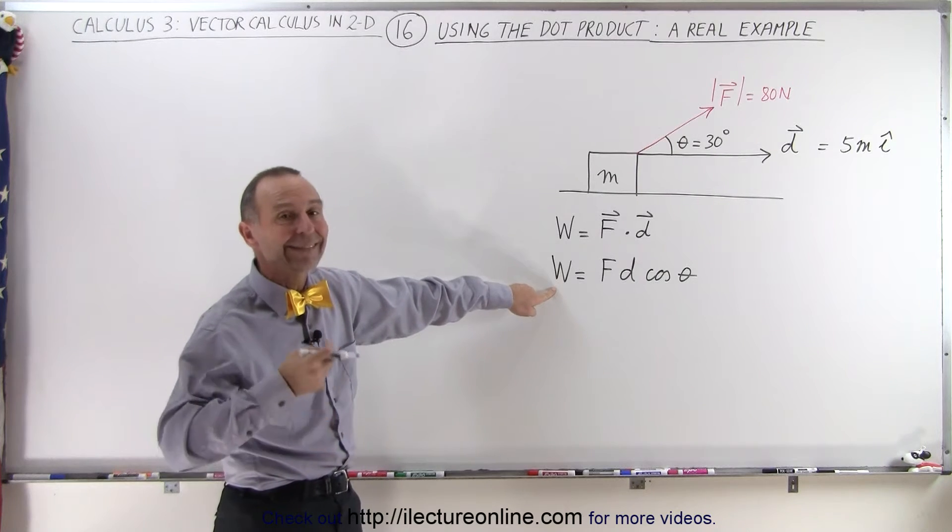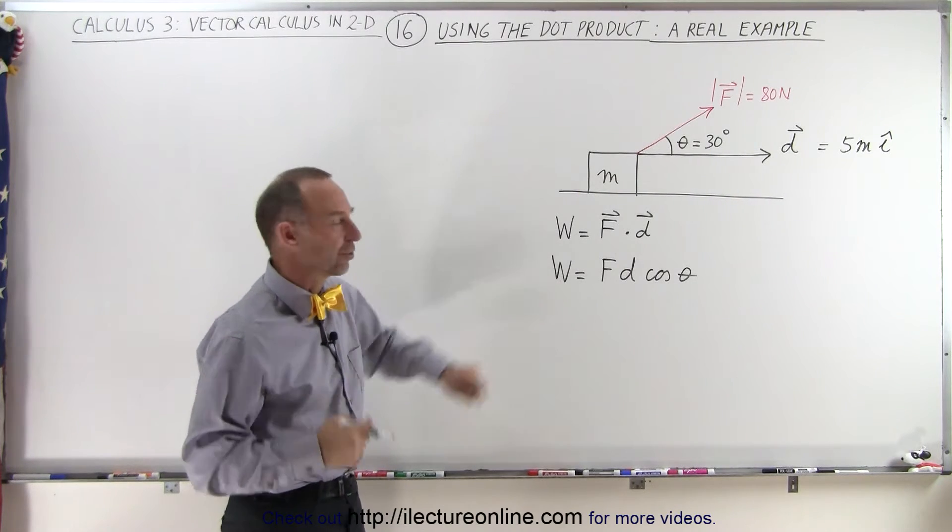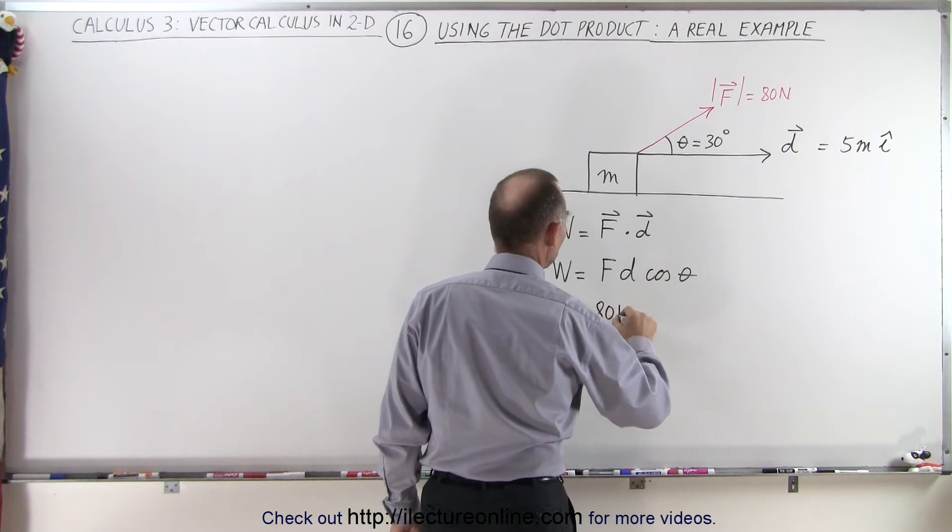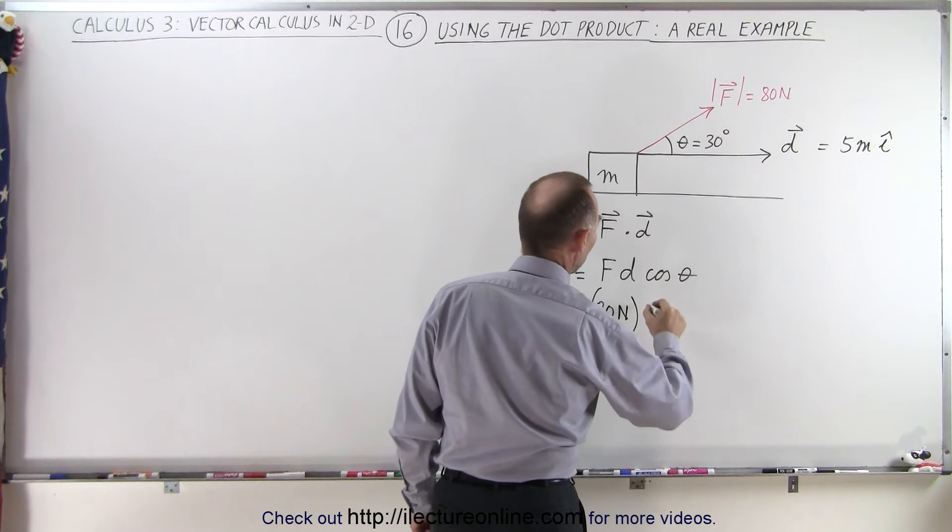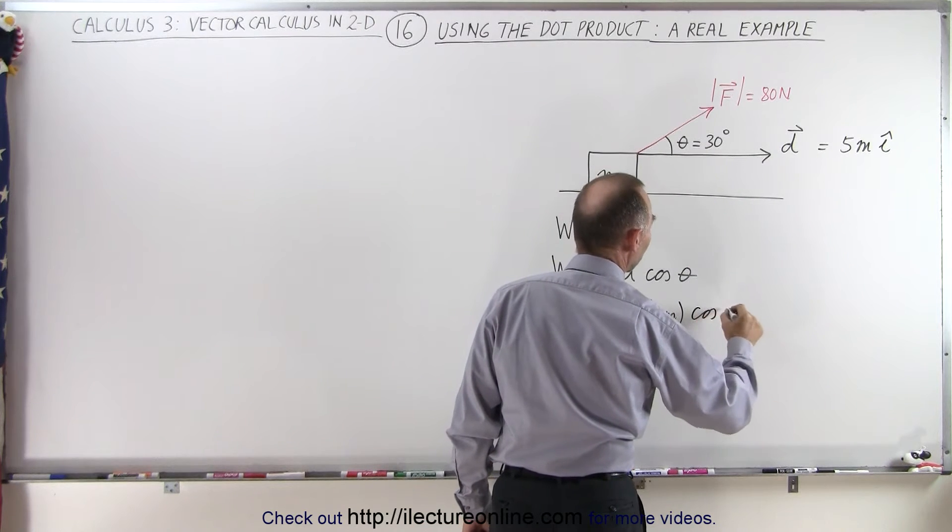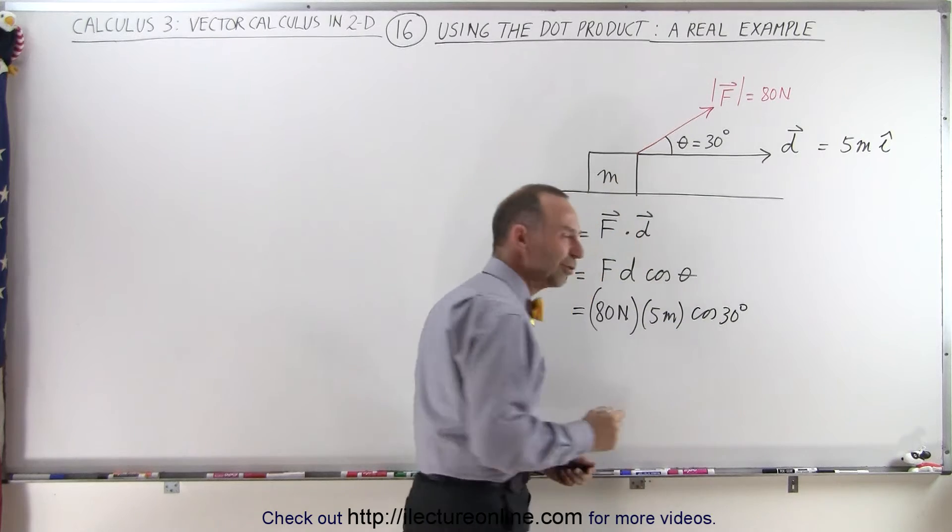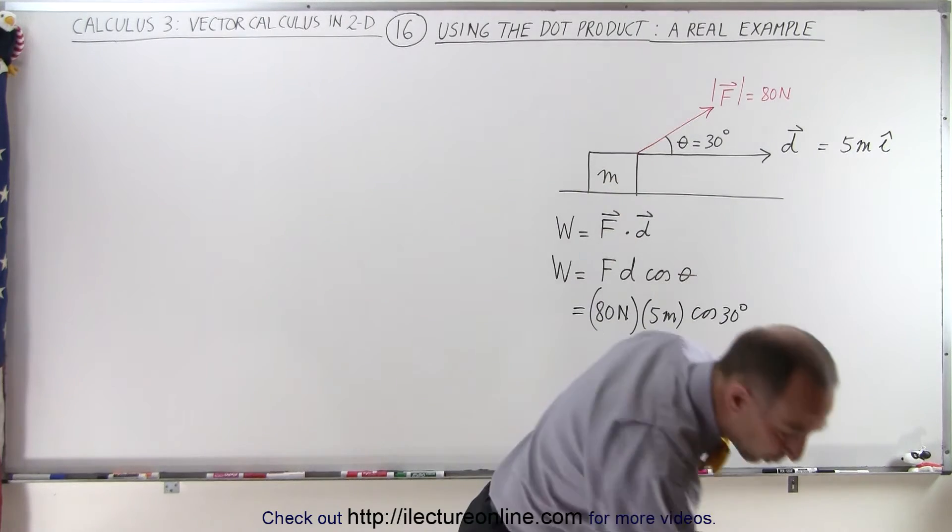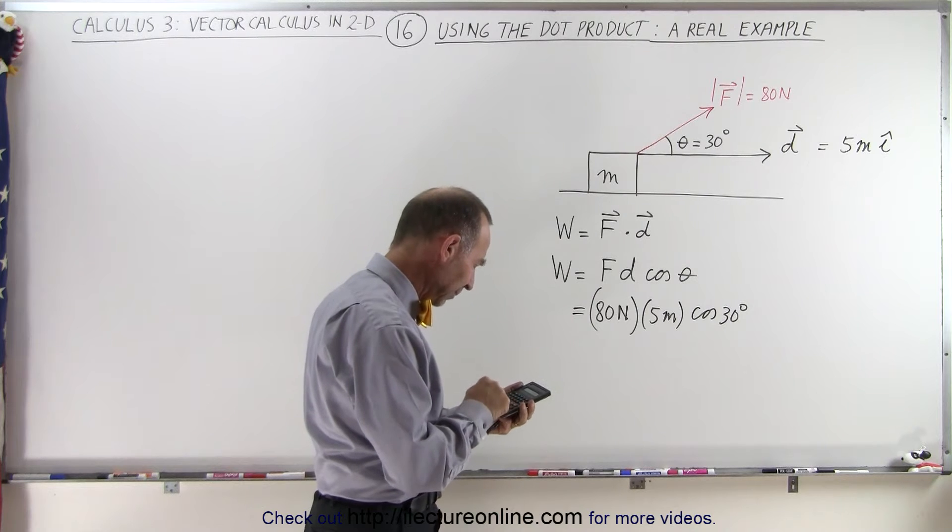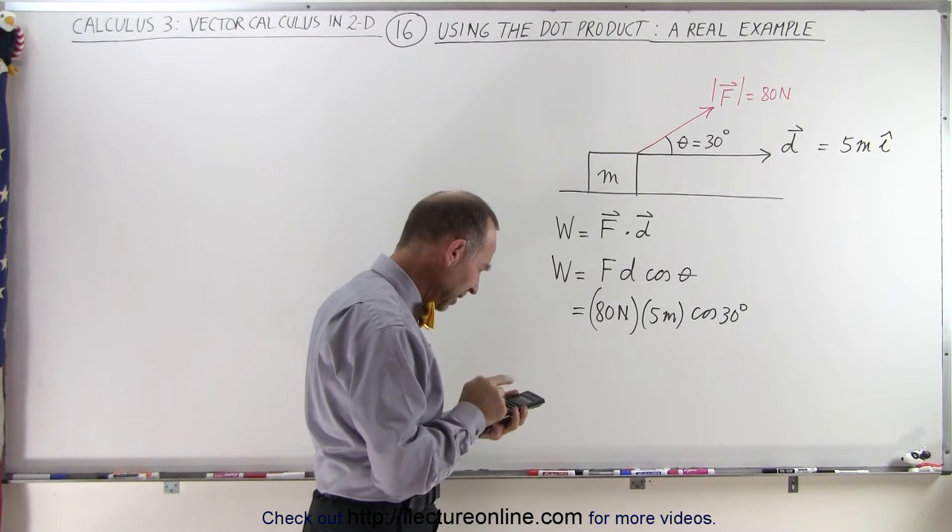So in this case, we have a force of 80 newtons and a displacement of five meters, with an angle between of 30 degrees. That becomes cosine of 30 degrees, which is 0.866. With our calculator, we get 400 times the cosine of 30, which is 346.4.